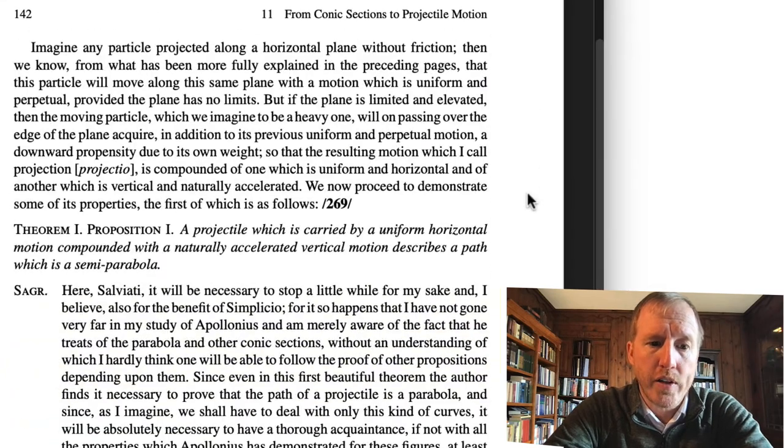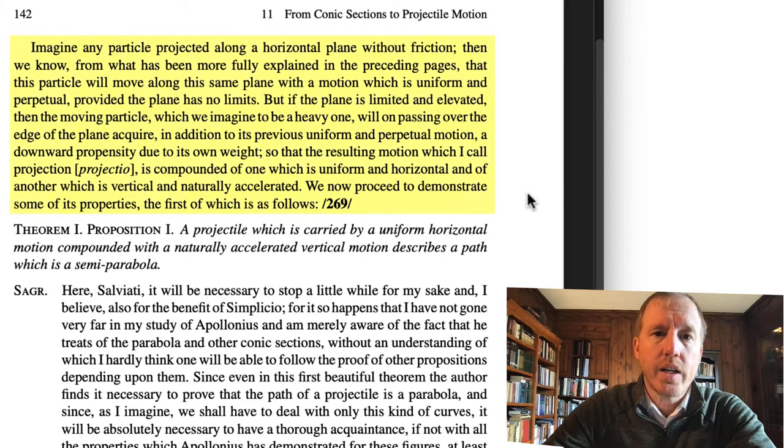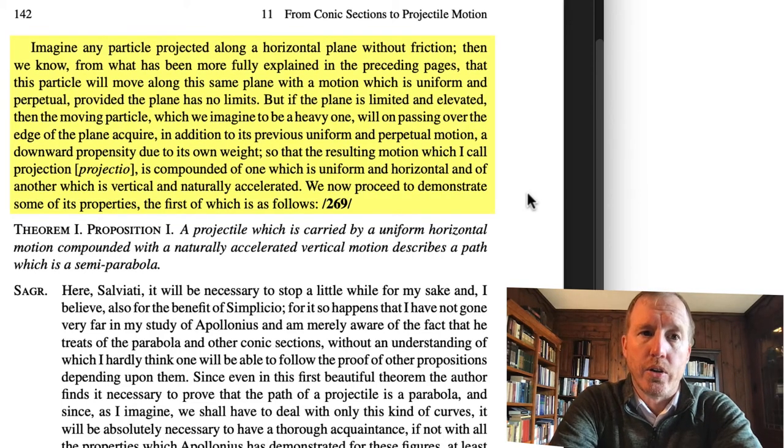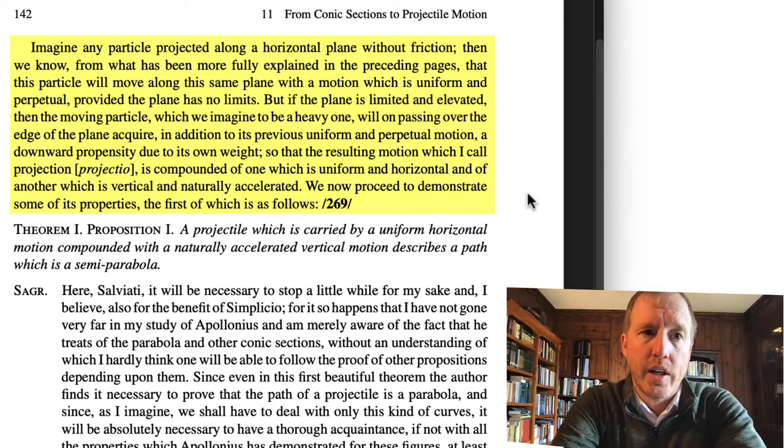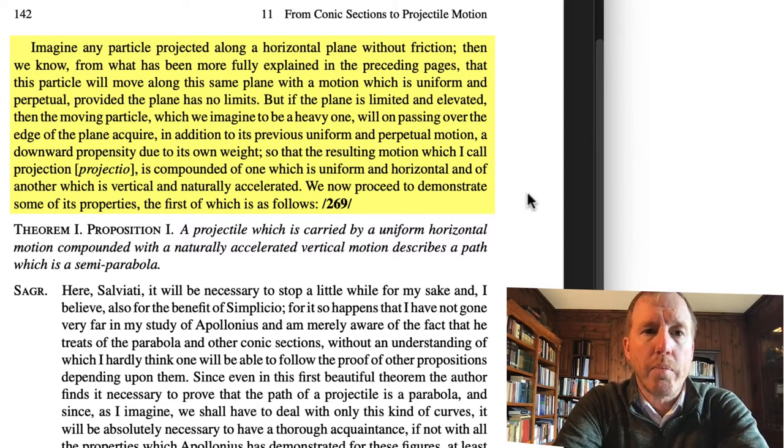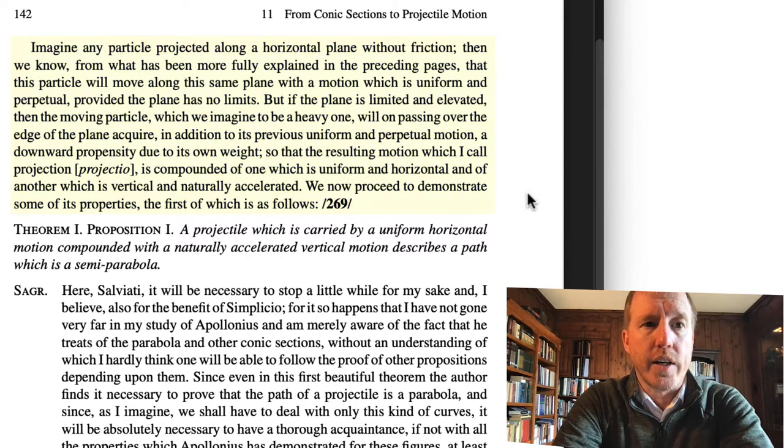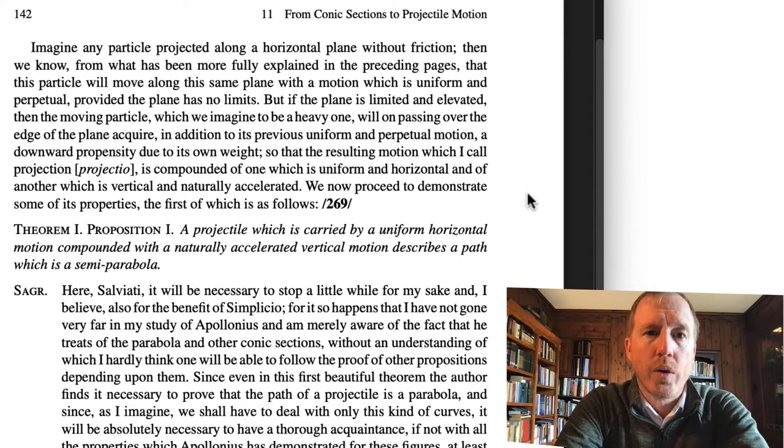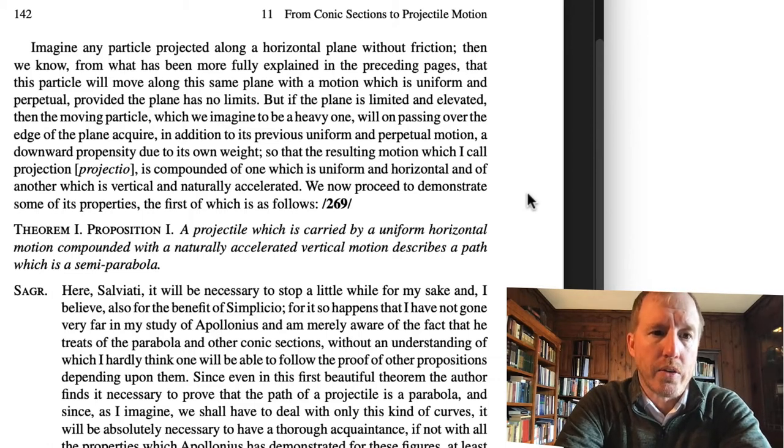This is the kind of motion seen in a moving projectile. Its origin I conceive to be as follows. He goes on to say: Imagine any particle projected along a horizontal plane without friction. Then we know from what has been more fully explained in the preceding pages that this particle will move along this same plane with a motion which is uniform and perpetual, provided the plane has no limits. But if the plane is limited and elevated, then the moving particle, which we imagine to be a heavy one, will on passing over the edge of the plane acquire, in addition to its previous uniform and perpetual motion, a downward propensity due to its own weight. So that the resulting motion, which I call projection or projectio, is compounded of one which is uniform and horizontal and another which is vertical and naturally accelerated. We now proceed to demonstrate some of its properties, the first of which is as follows.